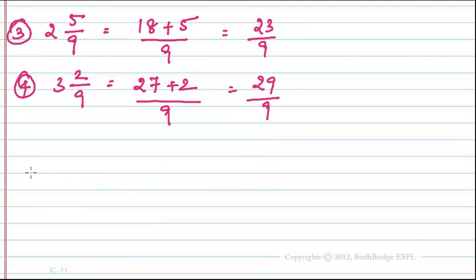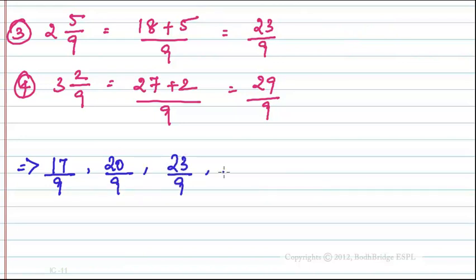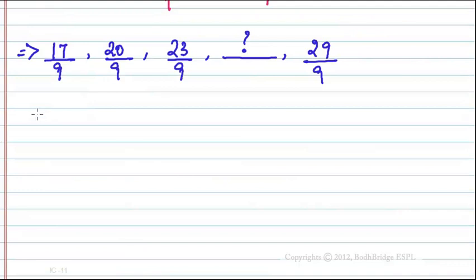We can rewrite the pattern as: 17/9, 20/9, 23/9, [missing value], 29/9. The denominator is the same in all terms, and the numerator increases by 3 each time: 17 + 3 = 20, and 20 + 3 = 23.